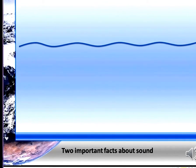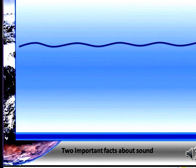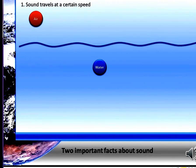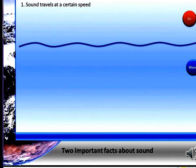Now, there's two important facts that you need to know about sound before you can start calculating. The first is that sound travels at a certain speed. It travels at different speeds in air and water. In fact, in water, it's 4.3 times faster than in air. In water, sound travels at about 1,500 meters per second.